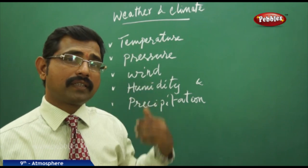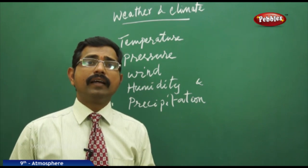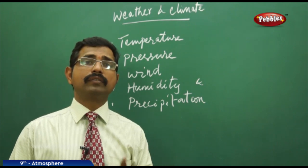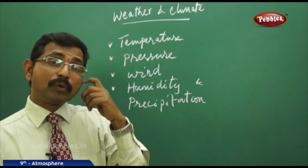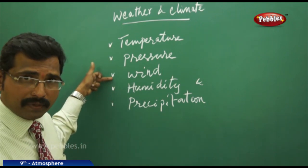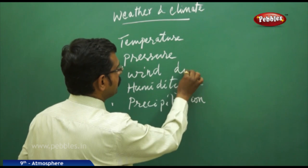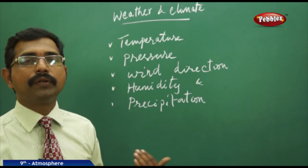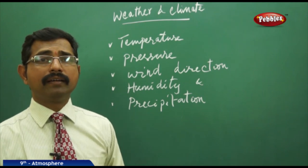The weather condition is cold, weather condition is too hot, all these things. When you observe this kind of changes over a longer duration, at least 3-4 months, we say it is the climate. The climate is nothing but atmospheric conditions like temperature, pressure, wind directions, humidity, and precipitation. If we observe these parameters for decades of time, we call that as the climate of that particular area.